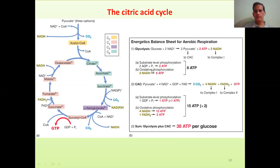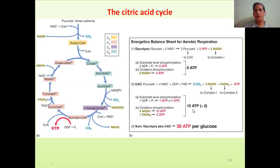From glycolysis: 2 ATP plus 2 NADH equals 6 ATP, giving 8 ATP molecules total. In the Krebs cycle, each pyruvate leads to formation of 3 CO2 molecules, 4 NADH, 1 FADH2, and 1 GTP. So 1 GTP equals 1 ATP, 4 NADH equals 12 ATP, and 1 FADH2 equals 2 ATP — giving 15 ATP per pyruvate. Since 2 pyruvate molecules are generated, we multiply by 2, giving 30 molecules. Adding the 8 from glycolysis, we have a total of 38 ATP molecules.